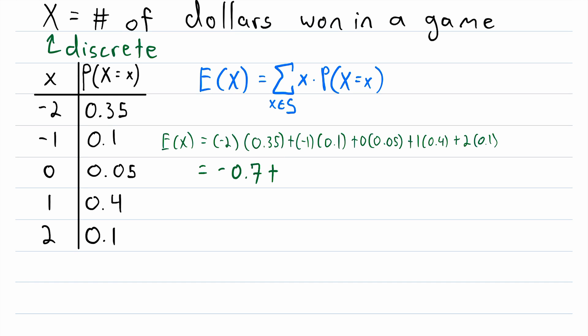Then to that, we're adding negative 1 times 0.1, that's going to be negative 0.1. Then we have plus 0 times 0.05, that's just plus 0.